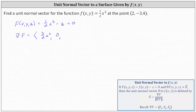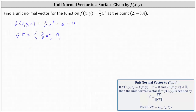The z-component is the partial of F with respect to z, so we differentiate ½x³ - z with respect to z, treating x and y as constants. The derivative of ½x³ with respect to z is zero, minus the derivative of z with respect to z, giving us negative one.